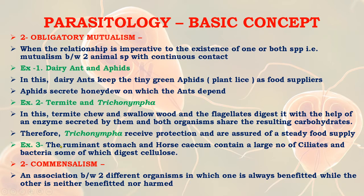Another example of obligatory mutualism is the ruminant stomach and horse caecum, which contain a large number of ciliates and bacteria, some of which digest cellulose. Now, next is commensalism.